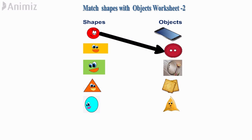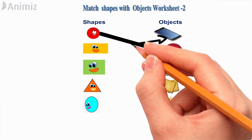Again in the first column, the second shape is rectangle. Let's find the object in the second column. Yes, it is a mobile.